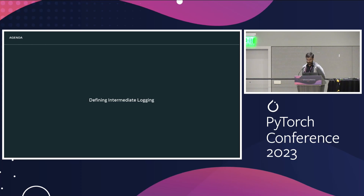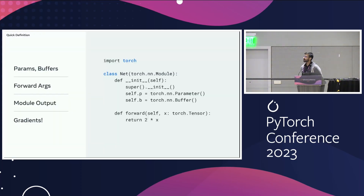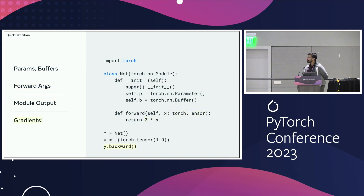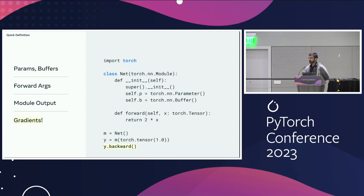So what do I mean by intermediate logging? Whenever you define a module in PyTorch, there are a couple of interesting values. You can have parameters and buffers — internal state for the model. You can have forward arguments to the model that you may care about looking at, and there's something the model is returning. When you run backward propagation, you also want to see all the gradients — gradients of the output with respect to the loss, the gradient of the forward argument, or self.b.grad or anything else. Those are the interesting values you may want to look at to understand what the model is doing.